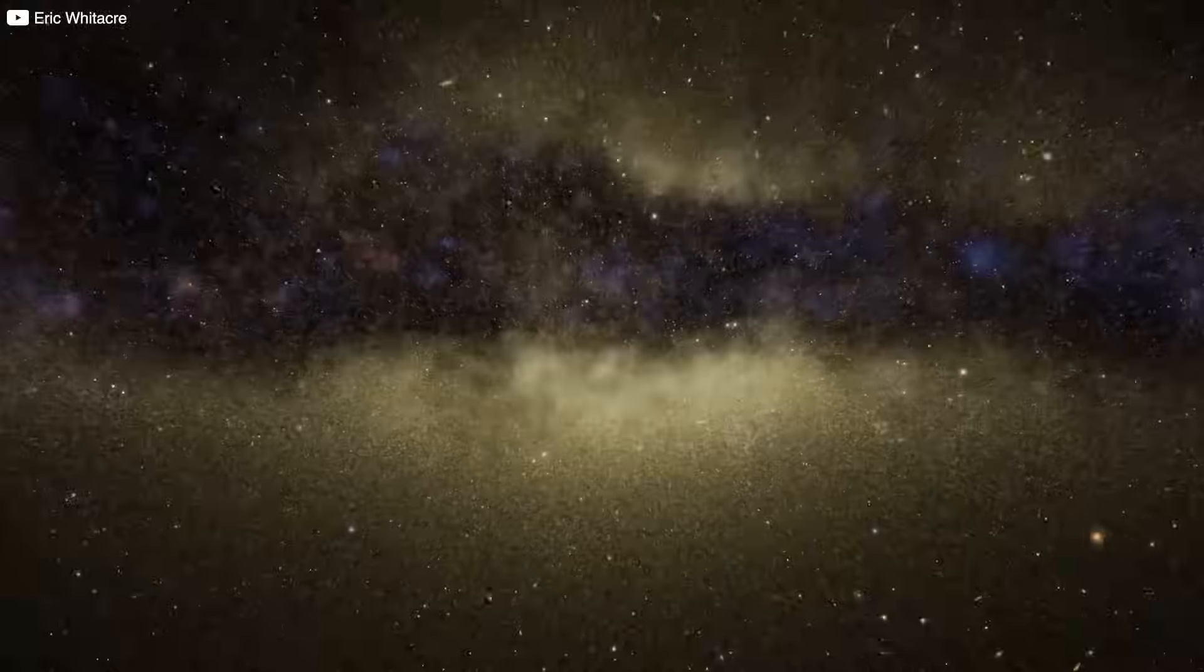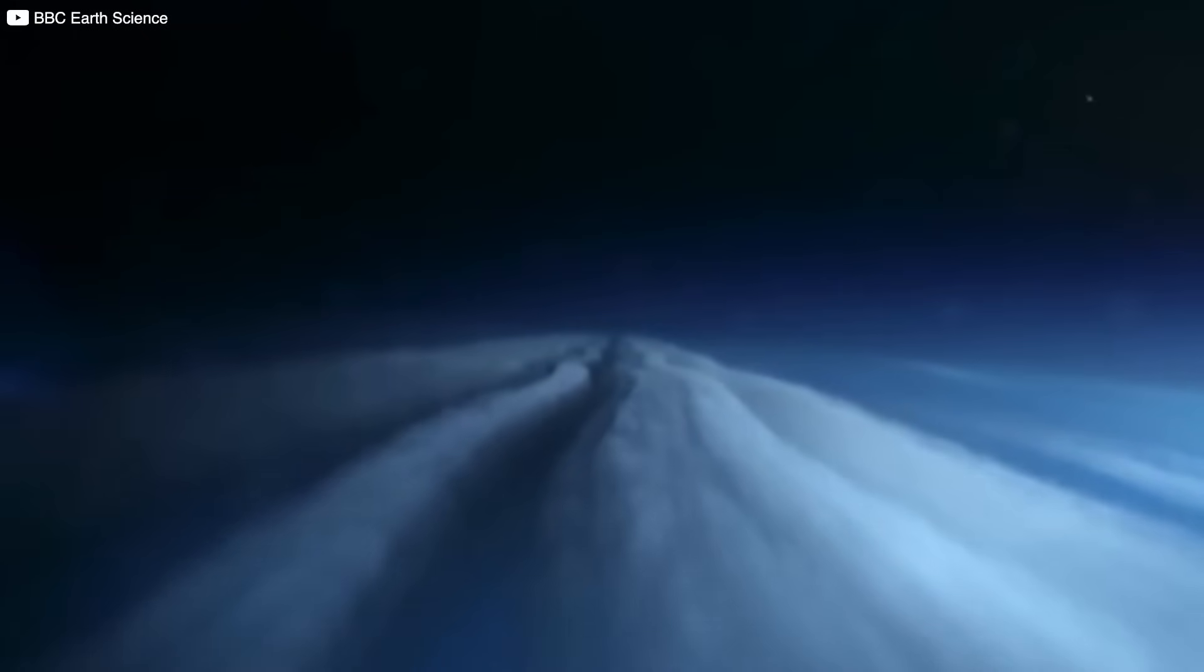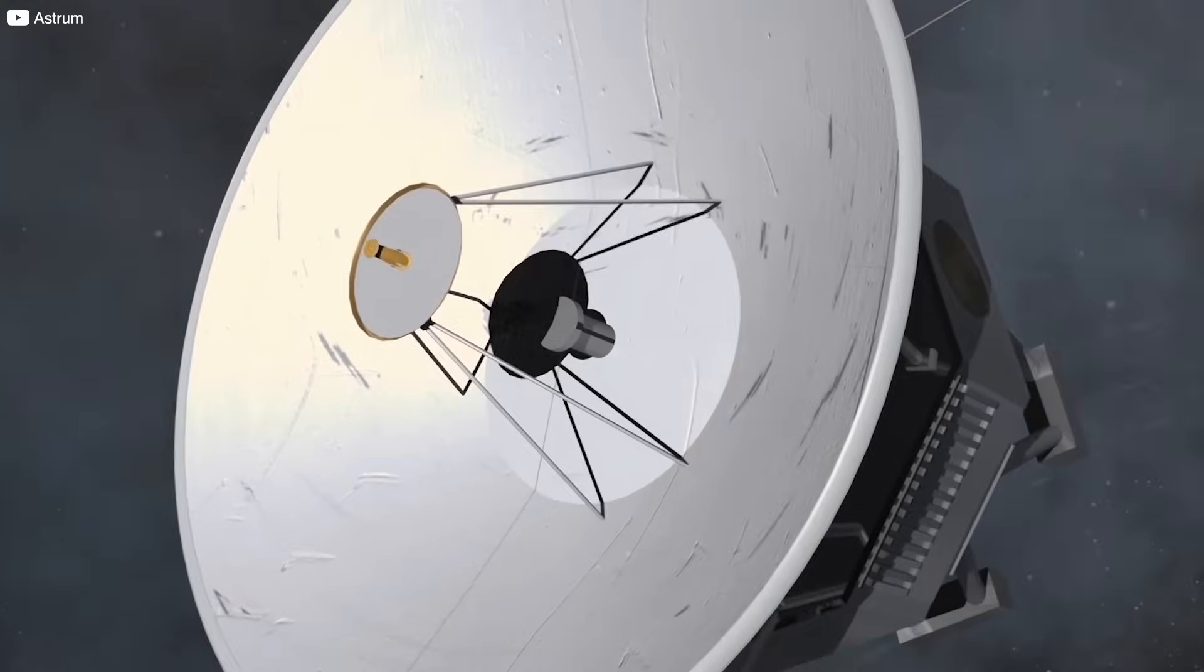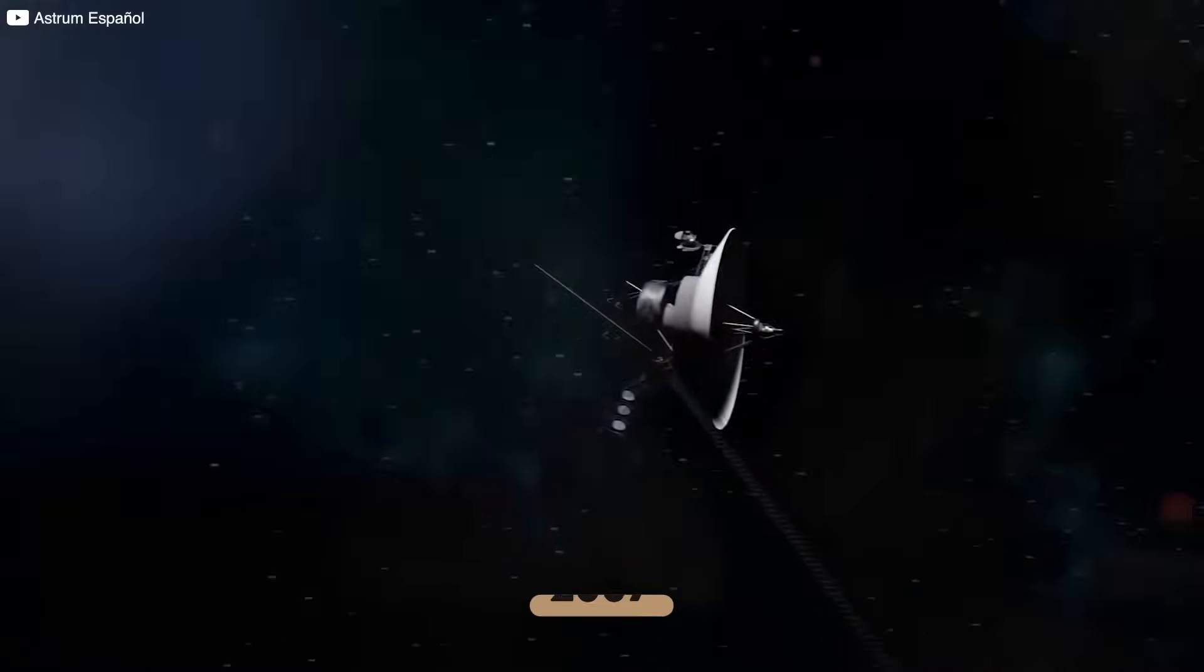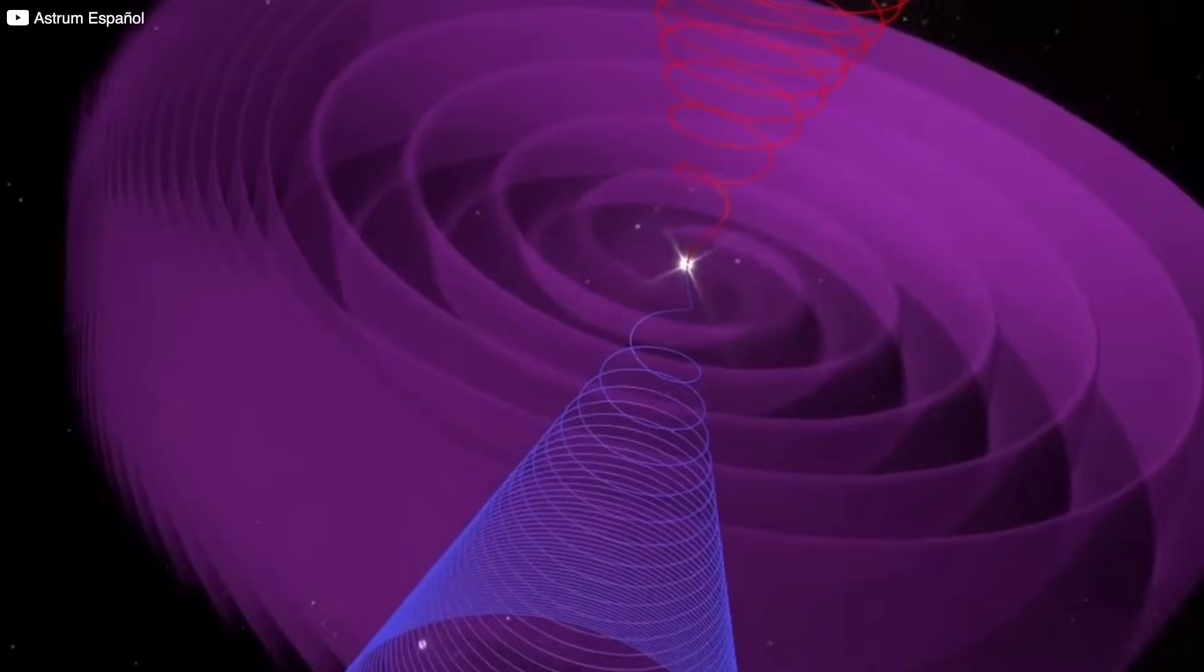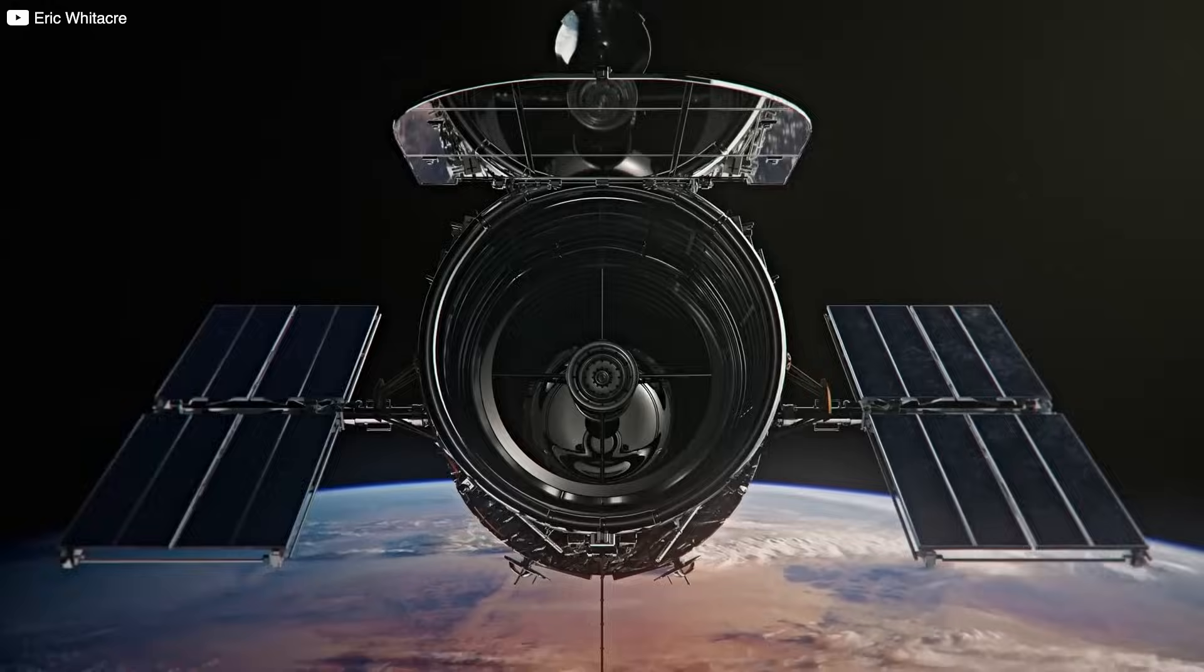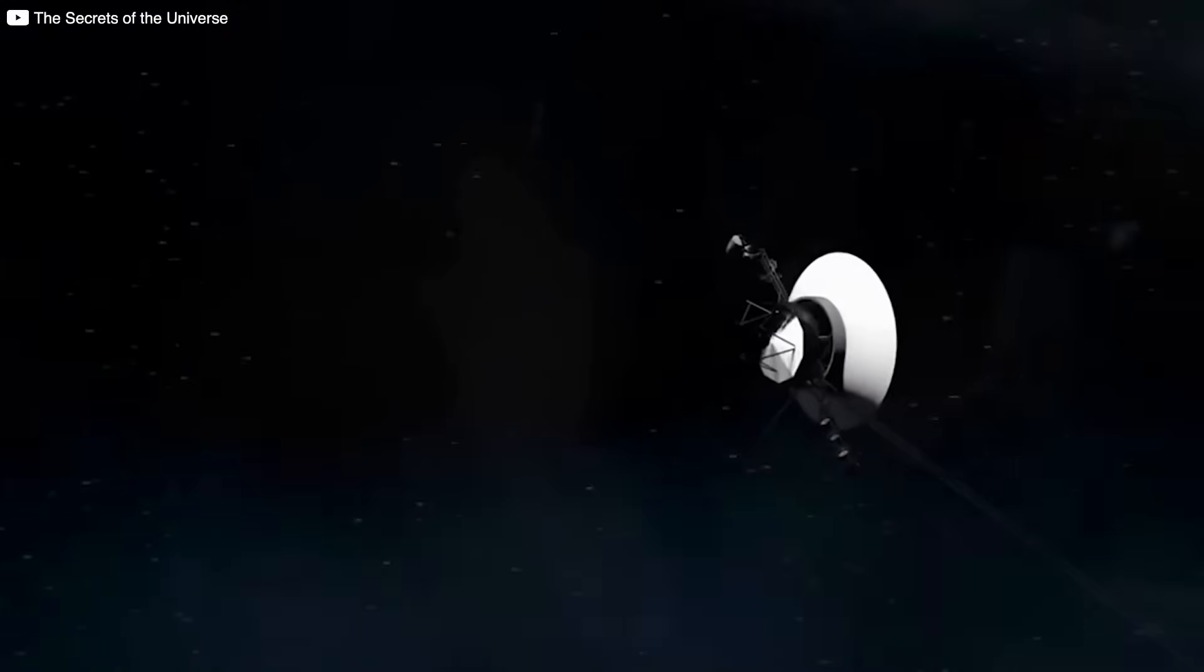The point where the solar wind drops from supersonic to subsonic speeds is known as the termination shock, which Voyager 1 crossed in 2004, followed by Voyager 2 in 2007. Beyond lies the heliosheath, a chaotic boundary zone, and eventually the heliopause, the true edge of our Sun's influence, marking entry into interstellar space.